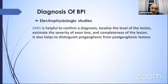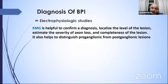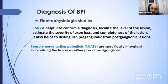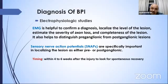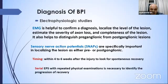Electrodiagnostic studies including EMG help confirm the diagnosis of nerve injury, localize the level of the lesion, estimate severity — whether complete or partial — and distinguish preganglionic from postganglionic lesions. Sensory nerve action potentials are specifically important for localization. Timing of these studies should be within four to six weeks after injury. Serial electrophysiological studies with repeated physical examination are necessary to identify progression of spontaneous recovery.